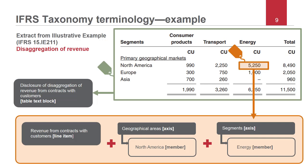This example also illustrates the concept of extensions. The IFRS taxonomy does not aim to cover disclosures that only a small number of entities report. It is possible for preparers to add their own elements to tag such disclosures, if they have the permission of the filing system owner, for example the regulator in a particular jurisdiction. In this example, the members North America and Energy are extensions created by the entity. If you'd like to learn more, we recommend the preparers guide and the guide to understanding IFRS taxonomy updates on our website.